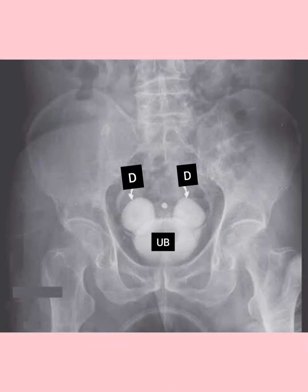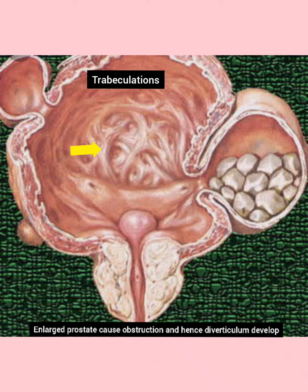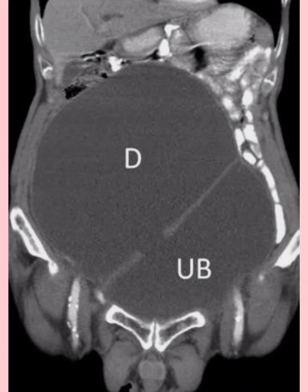Here are some more pictures. This is the scan with a full bladder, and this is the micturating cystourethrogram. This picture shows the causes and complications of bladder diverticulum. There are stones visible in the bladder diverticulum, which are due to stasis and infection. One of the causes is an enlarged prostate.